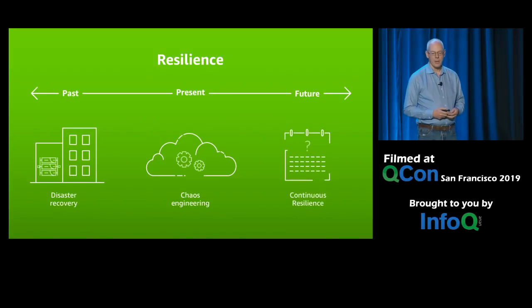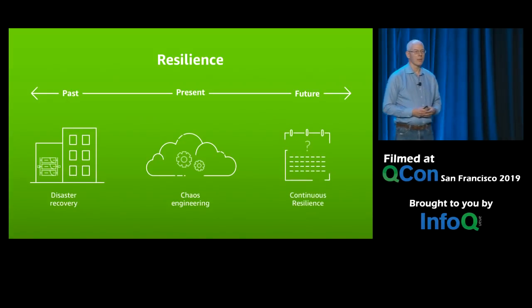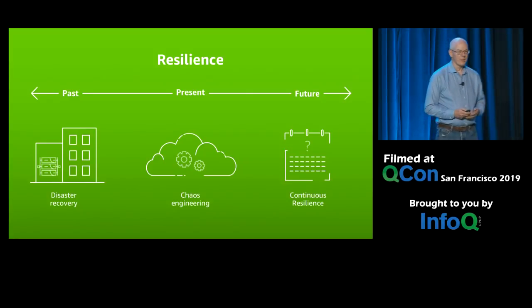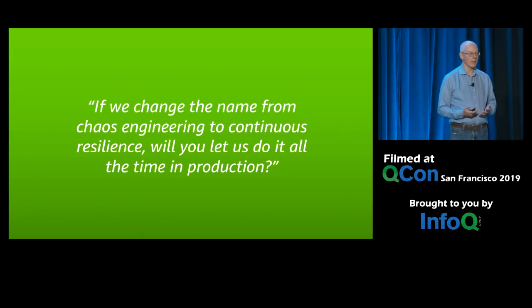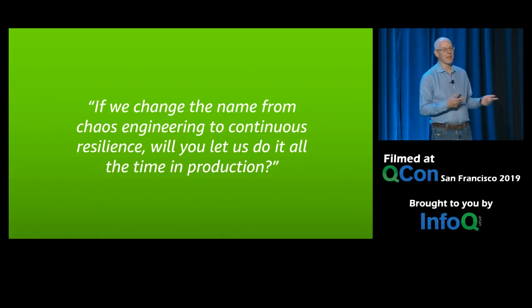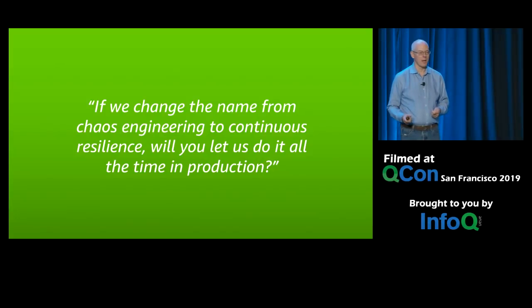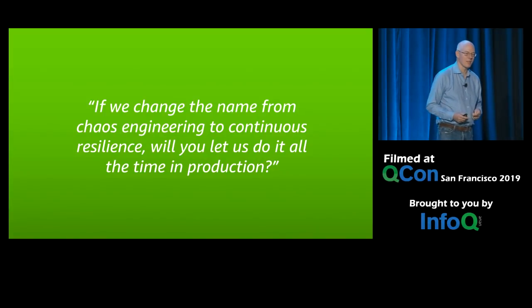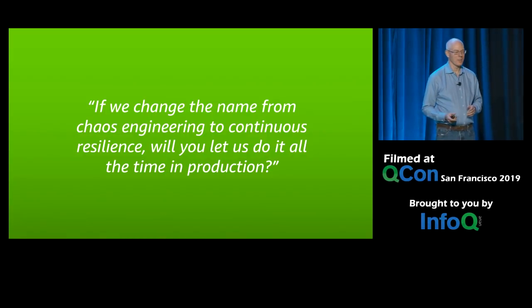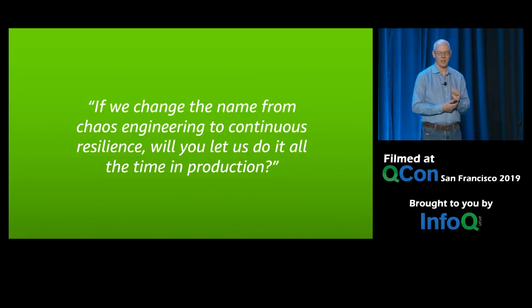What I think we're heading towards is continuous resilience. Nobody seems to want chaos in production, right? So if I call it continuous resilience, will you let me do it in production? Really, it's just changing the name — we're doing exactly the same thing. But when we're doing it in production, we'll call it continuous resilience, because I think that's easier to sell to management. Nobody doesn't want continuous resilience, but they're not sure about anything with the word chaos in it. So there's a bit of a branding thing here.